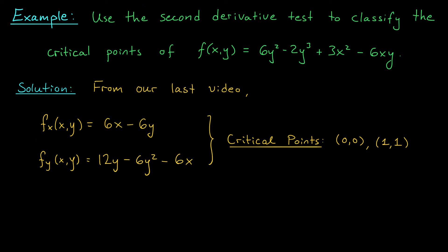To figure out if these are maxes, mins, or saddle points, we're going to use the second derivative test. To do that, we need to find the second derivatives of f(x,y). Okay, so let's start with the second partial derivative with respect to x. That's obtained by differentiating this expression one more time with respect to x. I get a value of 6.